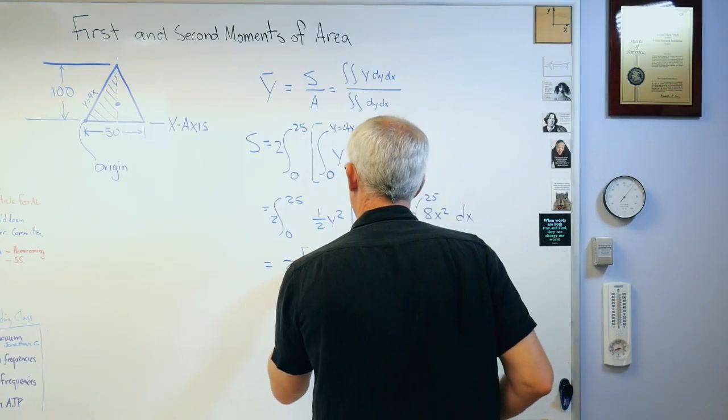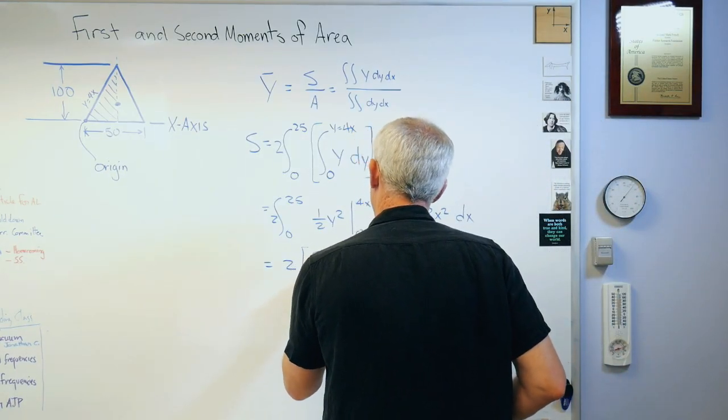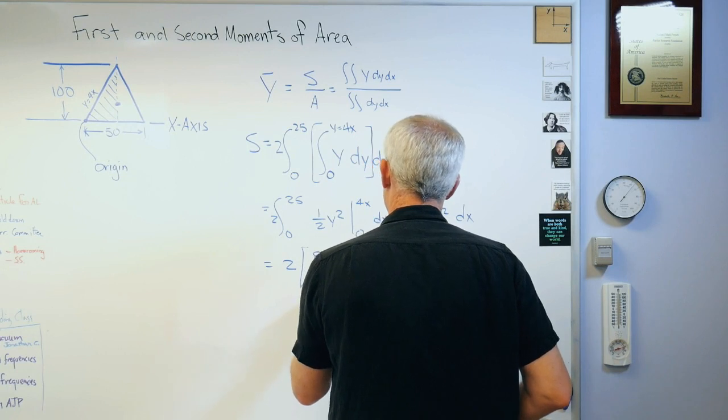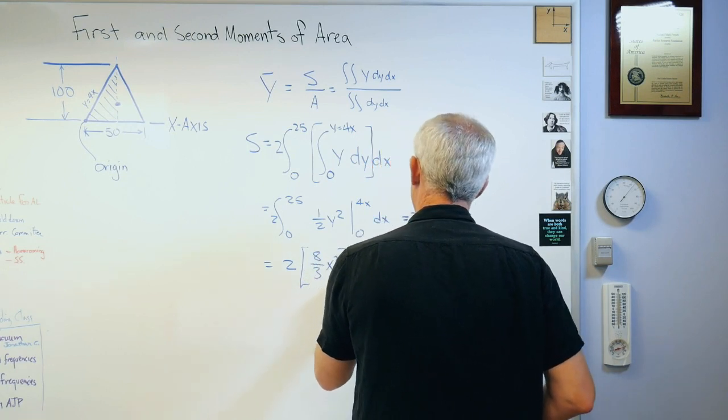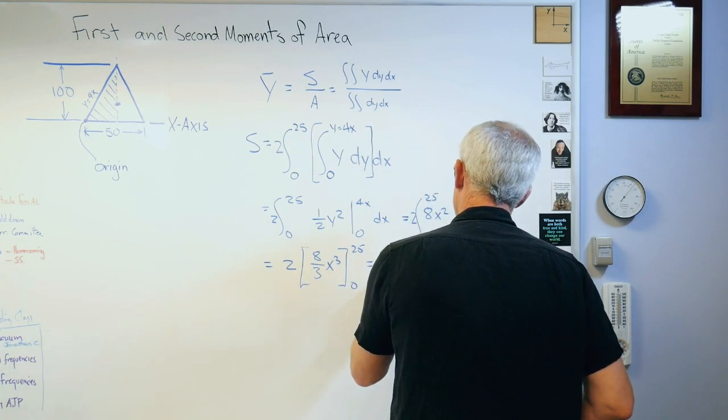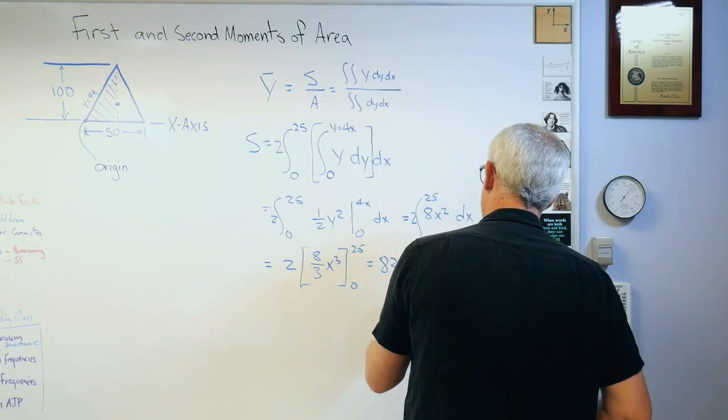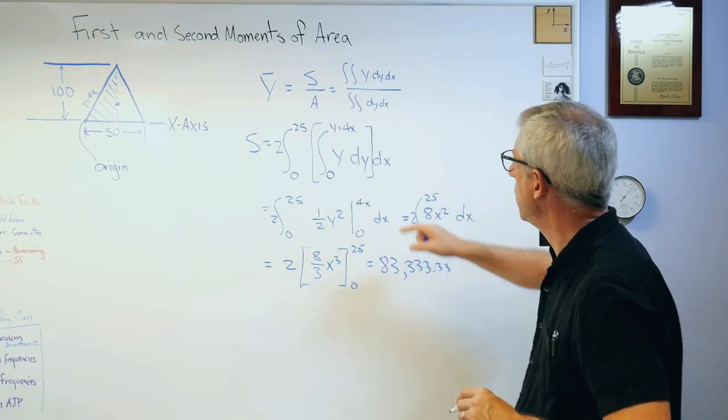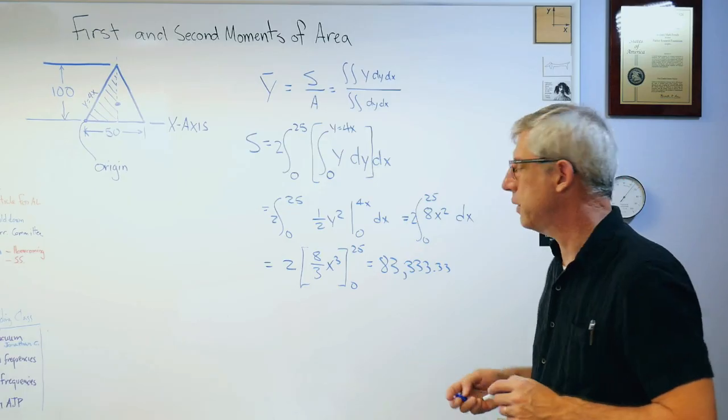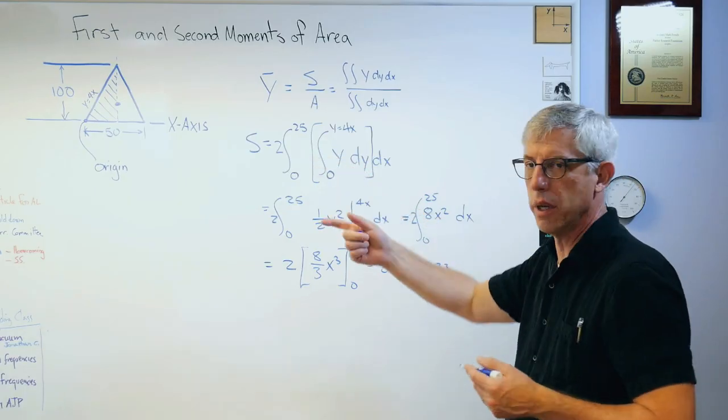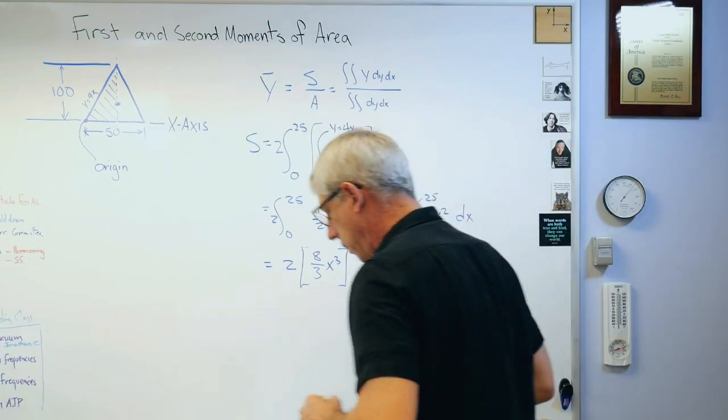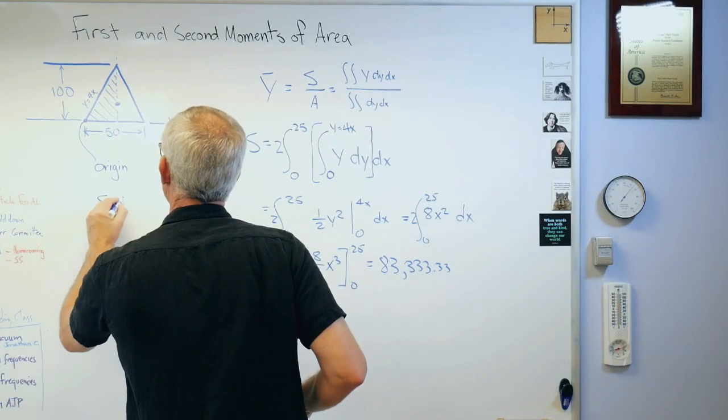When I integrate, I'm going to get 8 over 3 x cubed, and that goes from 0 to 25, those are my integration limits. When you do this, you get 83333.33 forever and ever, and that's going to be distance times an area. So it's actually going to be, if you're doing this in say millimeters, it's actually millimeters cubed.